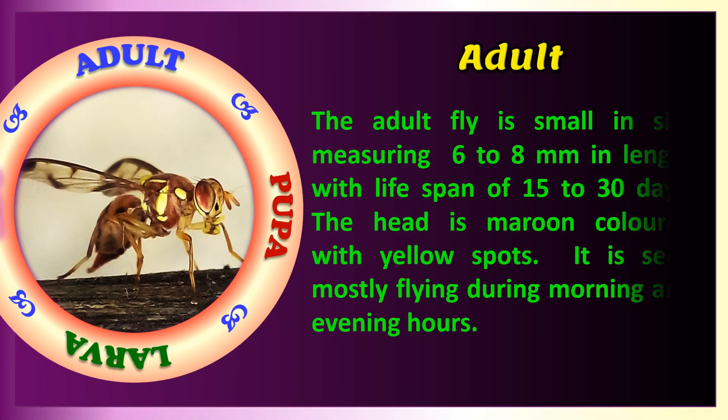The adult fly is small in size, measuring 6 to 8 mm in length, with a lifespan of 15 to 30 days. The head is maroon colored with yellow spots. It is seen mostly flying during morning and evening hours.